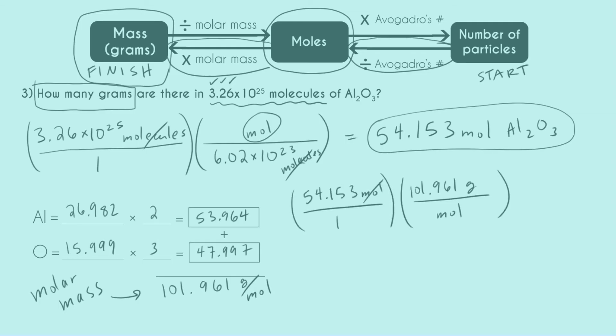Moles is going to cancel out, I'm going to end up in grams. I get 5,521.48. Now checking for sig figs, I have 3 from my original number and I also have 3 from using Avogadro's number. So rounding this to have 3 sig figs, I get 5,520 grams of Al2O3. No decimal point. I want to make sure I only have 3 sig figs.